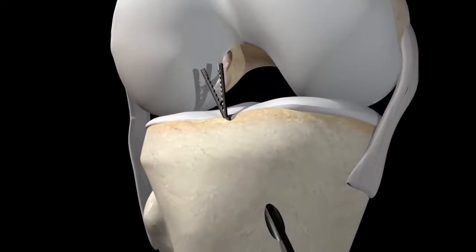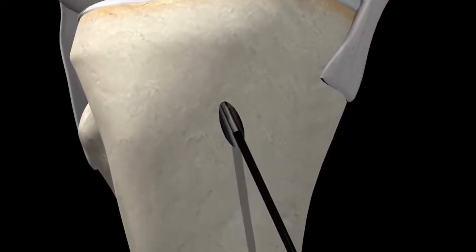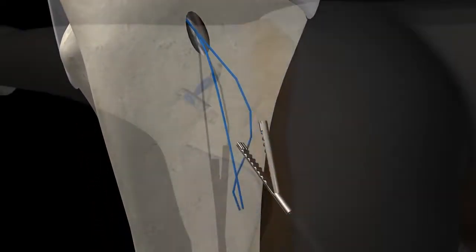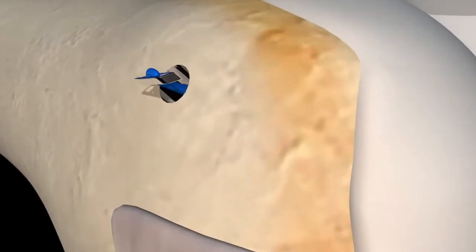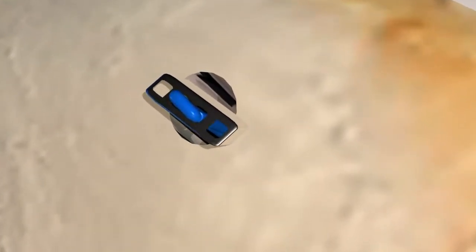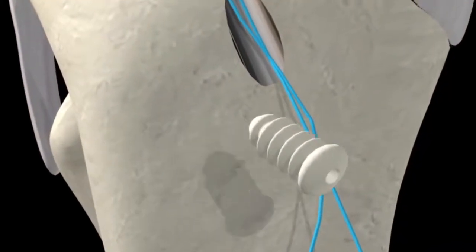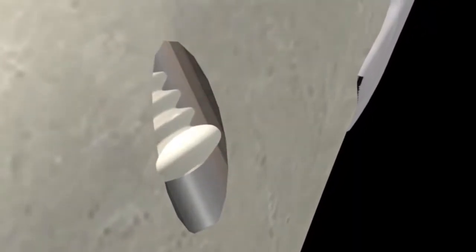This is a process where the ligament is reconstructed by replacing the torn ACL with a tissue graft for the new ligament to grow on. The source of grafts used are from hamstring tendons, quadricep tendons, and most commonly, the patellar tendon. This is the tendon that runs between the kneecap to the shinbone.